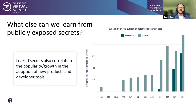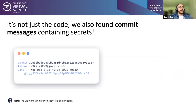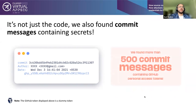It's not just the code where we found secrets. We found commit messages themselves containing secrets — most of the time GitHub personal access tokens. In total we found more than 500 commit messages containing these tokens. This is a very risky secret to expose because your GitHub account can then be used to clone repositories or insert malicious pull requests.